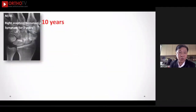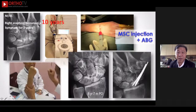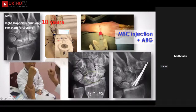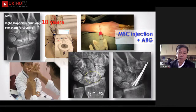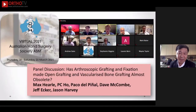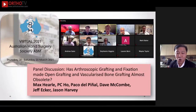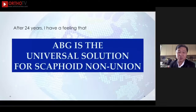This is a case with 10 years of non-union, symptomatic for three years. The scaphoid cavity is very large, but the patient is not old, so we decided to perform the ABG, but at the same time inject BMP-2. The patient achieved excellent clinical function and pain relief. So after 24 years of practice, I believe ABG perhaps will be the universal solution for scaphoid non-union, despite all occasions. There is obviously some evidence now supporting this conclusion.